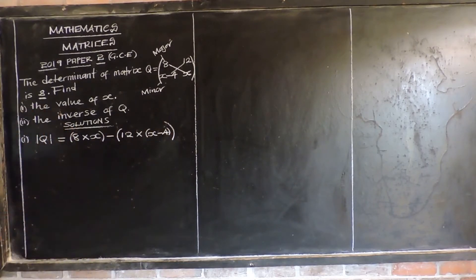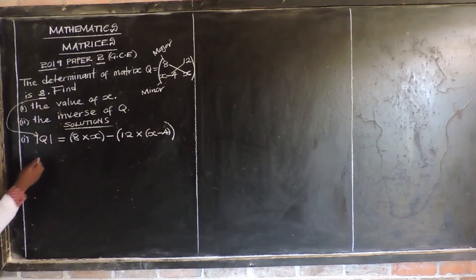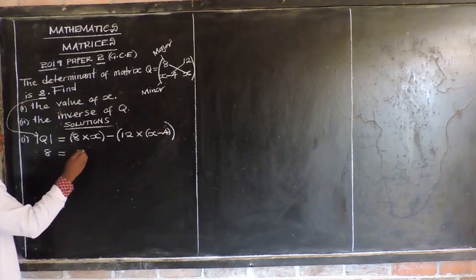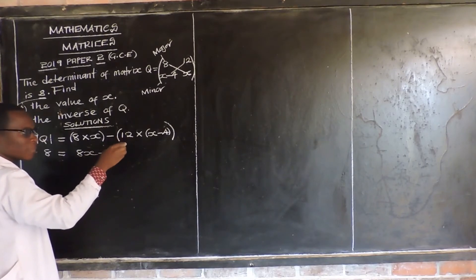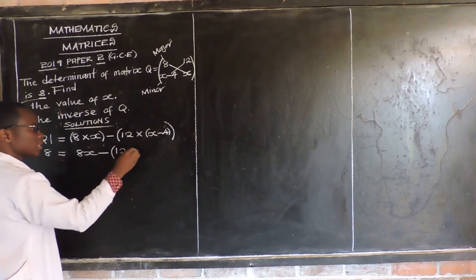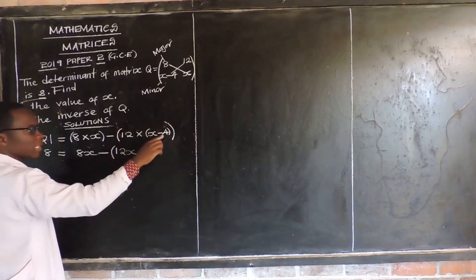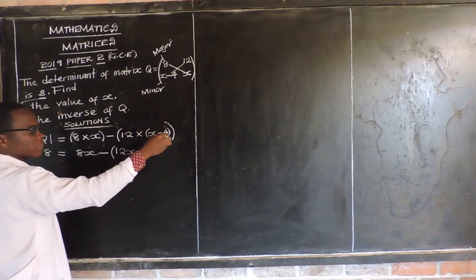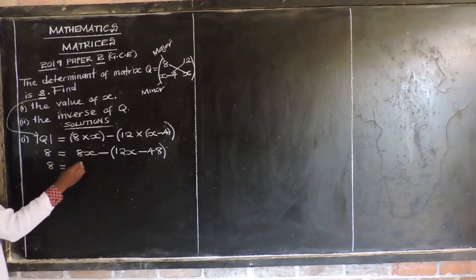In this case, what is our major diagonal? We have 8 multiplied by X. Then minus the product of the minor diagonal. The determinant of Q has been given as 8, so we put 8. We say 8 is equal to: 8 times X gives 8X. Then minus — open up the brackets — we multiply 12 by the two entries: 12 times X gives 12X.